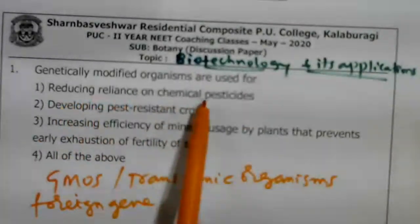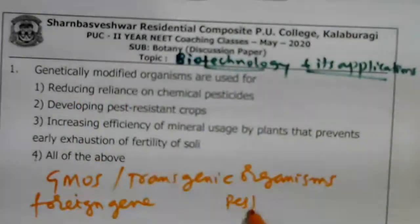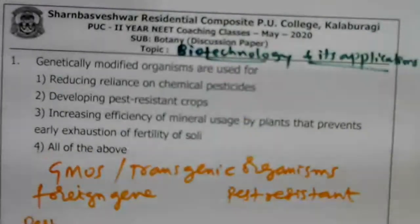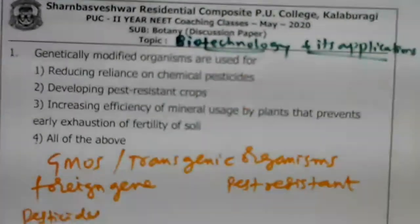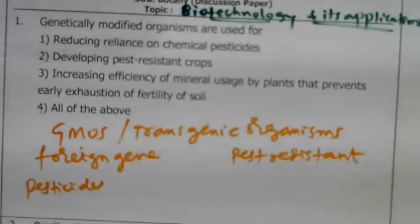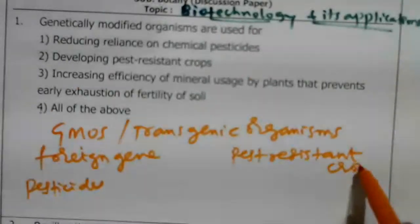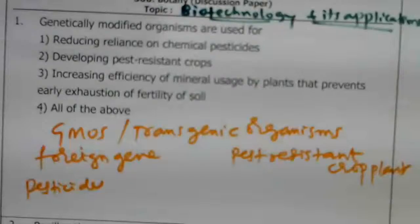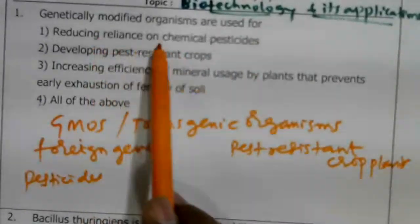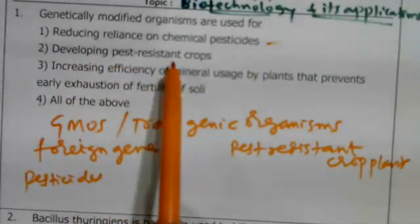First statement: reducing reliance on chemical pesticides. We are producing pest-resistant crops. When you produce pest-resistant crops, we need not use pesticides — we can minimize their usage. As you know, chemical pesticides are harmful, non-biodegradable, and not eco-friendly. That's why we should minimize their usage. Genetic engineering has helped us in producing pest-resistant crop plants.